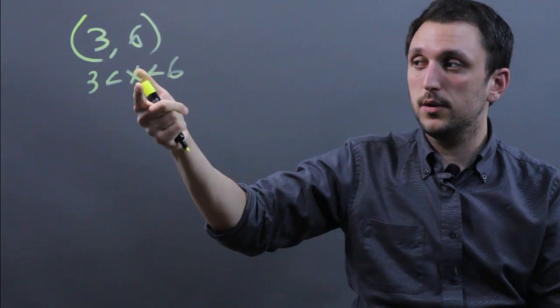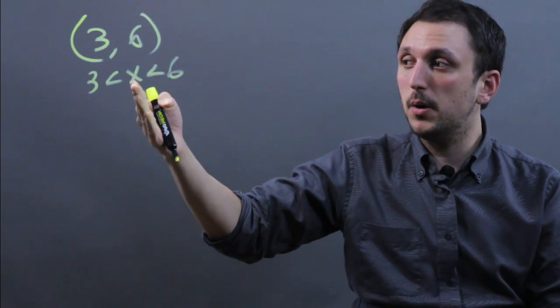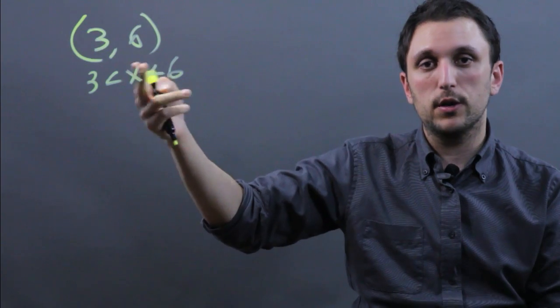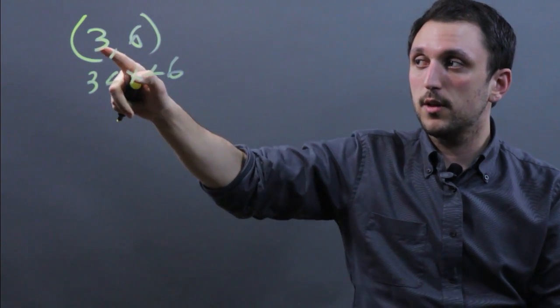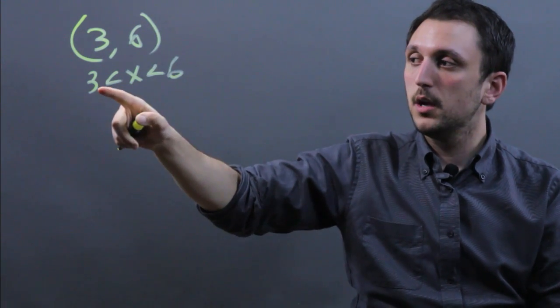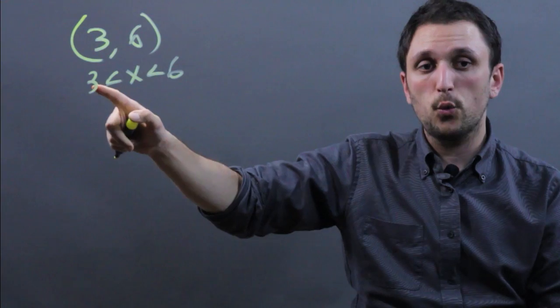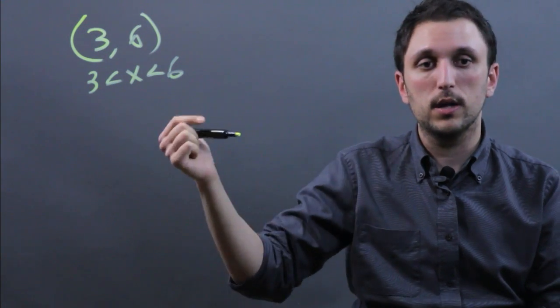I'm just using x as a variable, but you might have a different variable that you're trying to solve for. The point is, if you have (3, 6), it means that x has to be between 3 and 6. It cannot include 3 and 6.